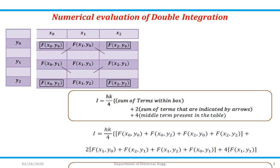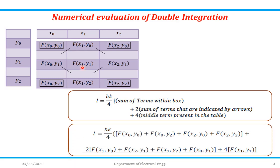So we can write this explicitly: sum of terms within the box means f(x0,y0) + f(x2,y0) + f(x0,y2) + f(x2,y2). Then 2 times the sum of terms indicated by arrows: f(x1,y0), f(x2,y1), f(x1,y2), and f(x0,y1). Add these multiplied by 2, and then 4 times the middle term f(x1,y1). This is the trapezoidal rule formula for numerical evaluation of double integration.